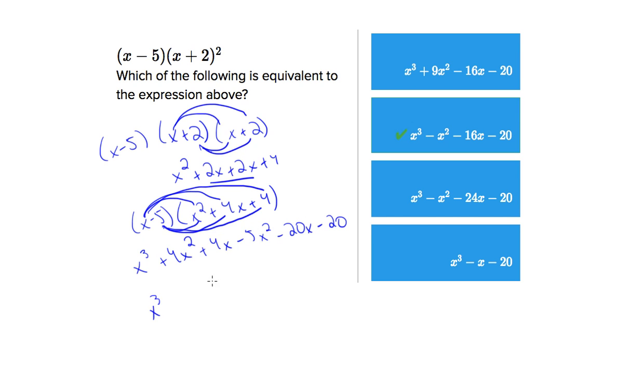And then just combine your like terms. We've got 4x² minus 5x² gives you -1x². 4x minus 20x gives you -16x-20. And that matches up with this second option here.